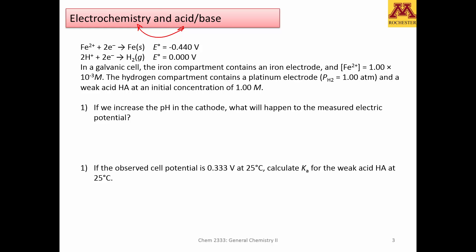So in this case, we are being told that you have a galvanic cell, a spontaneous reaction, in which you have an iron compartment containing an iron electrode and 10 to the negative 3 molar of iron 2+, and in the other compartment you have a platinum electrode, which is pretty much an inert electrode with hydrogen kept at one atmosphere, and you have a weak acid. The weak acid is going to be your source for hydronium ions.